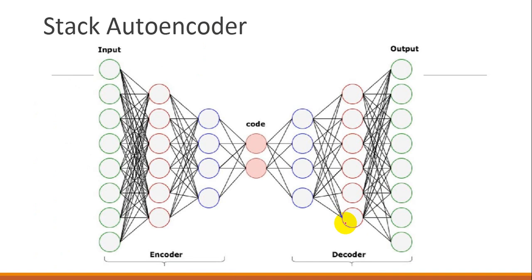This indicates that the input dataset has more features than the number of input nodes, so we need to keep the hidden nodes more than the input nodes. In the practical implementation, we will use the stacked autoencoder where we will see that we can create a recommendation system, which we have also done using the Boltzmann machine.